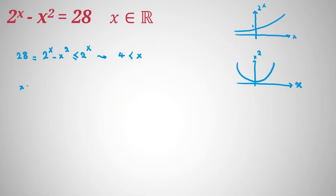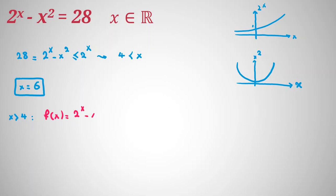Because x equals 6 works, we found one answer. One way to prove this is the only answer is to pay attention to whether the function is increasing or decreasing. We know x has to be greater than 4, so x equals 6 is one answer. Now let's examine whether 2 to the x minus x squared is increasing or decreasing for x greater than 4.